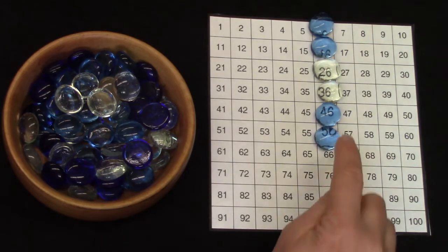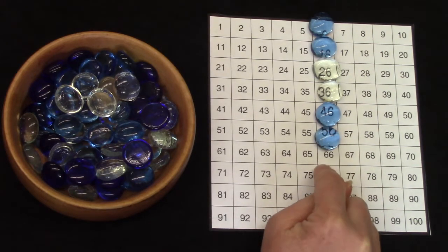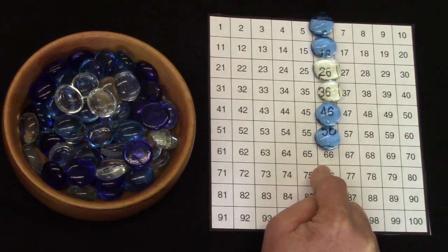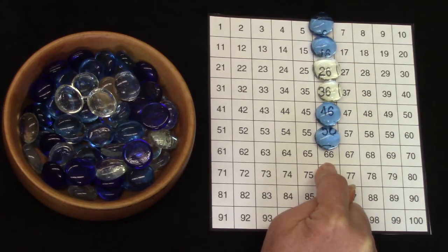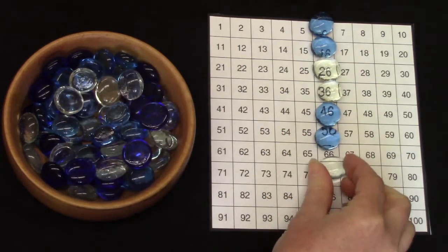Every time that we add 10 to a number the answer is going to be right underneath of it. We don't even have to count. If we are going to add 10 to 56 we know it's going to be 66. I'm going to put a gem there.